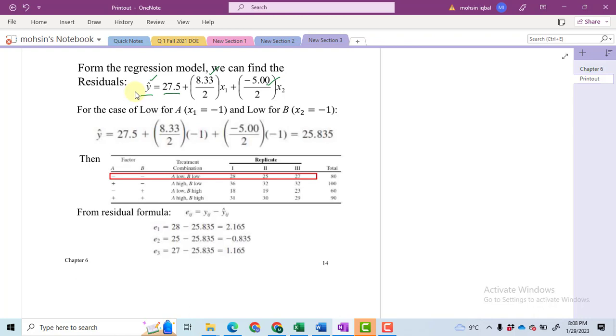So first of all we will put the first treatment, that is A low. So we will put in place of x1 here, we will put x1 equal to minus 1, and likewise x2 equal to minus 1, and we get our predicted value y bar equal to 25.835.